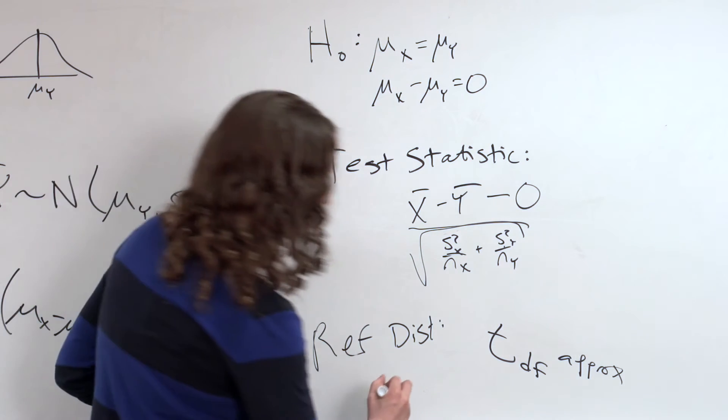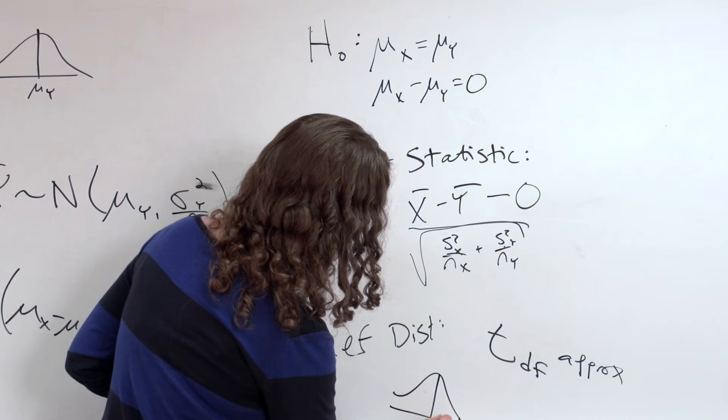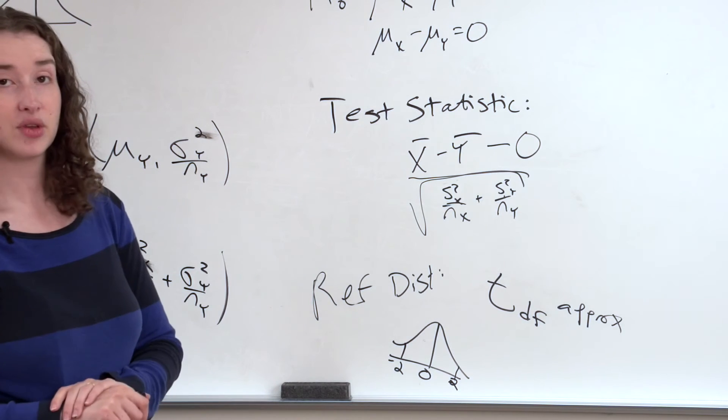That all sounds really complicated, but as long as your sample sizes are pretty big, you just use a normal distribution, which is centered at zero and is between two and negative two with 95 percent probability, and that is typically good enough.